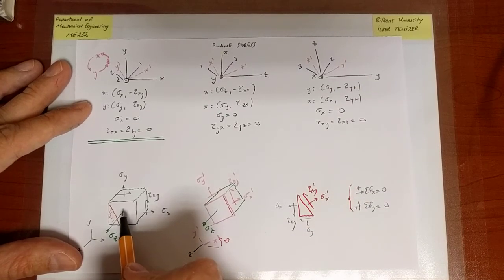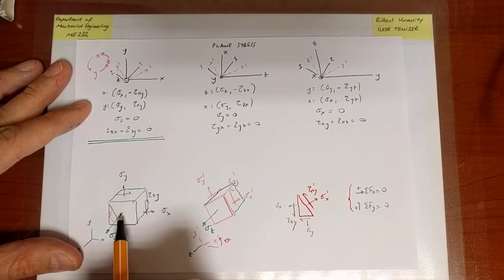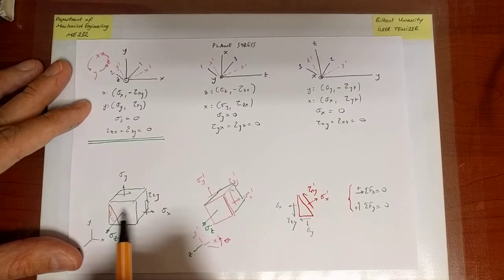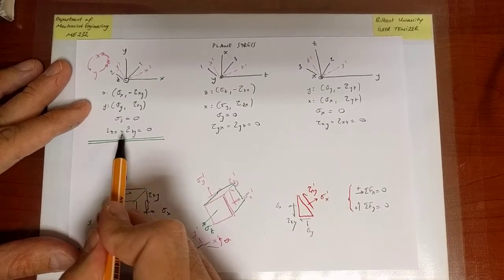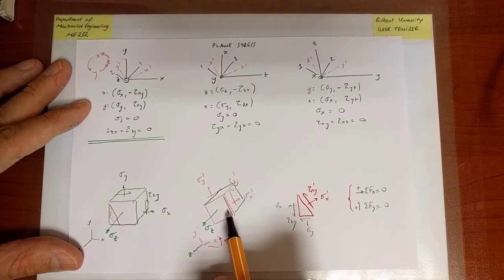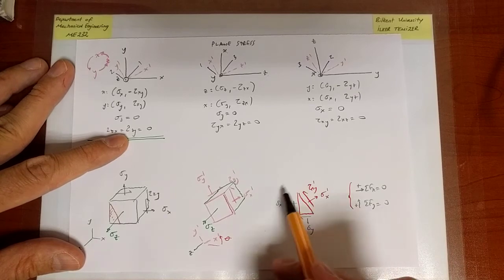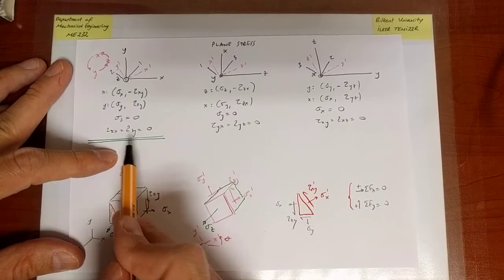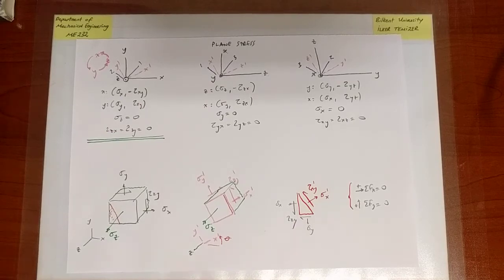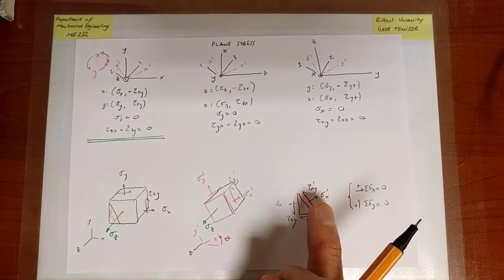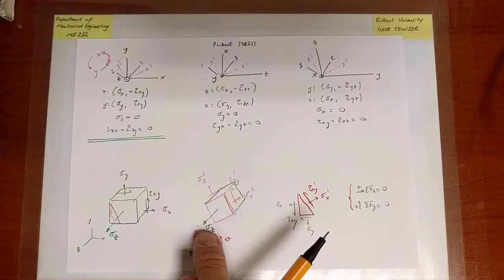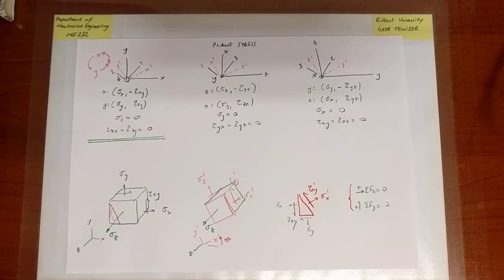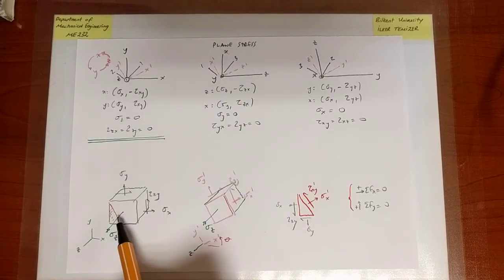Notice that if instead of sigma_Z — or in addition to sigma_Z — I had imposed a tau_ZX, which is on the plane with normal Z in the X direction, then the sum of forces along X would be influenced by it. Likewise, a tau_ZY would influence the Y equilibrium. As I make rotations, the equilibrium equations would be influenced by those shear stresses and everything I've done would be invalidated. But that's not the case if there's only sigma_Z, because it acts in an entirely separate direction. Therefore, we conclude that if you generalize plane stress by adding a normal stress only, everything we've done remains valid.